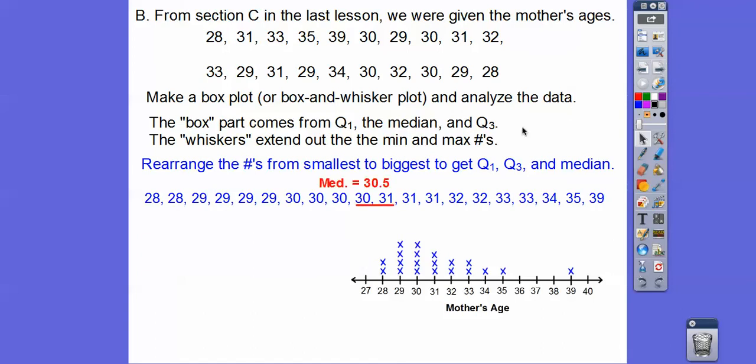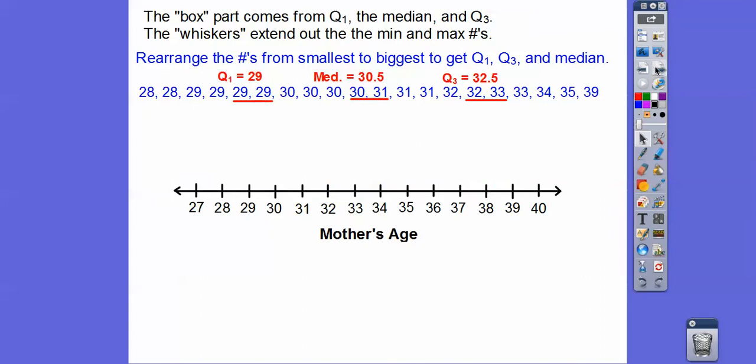So then the middle is our median. The median between these two numbers is 30.5. And then quartile 1 is the median from these guys, and there's quartile 3 right there. So the box comes from these three numbers right here. Here's the number line that represents all of these numbers, and we're going to make a box. A rectangle from 29 to 30.5 to 32.5. I'm going to draw a little vertical line at 30.5, and then the same one at 32.5. There's my box for my box and whiskers. Now the whisker is going to extend out to the smallest number, which is 28, and the biggest number is 39. So there's the whiskers from 28 to 39.